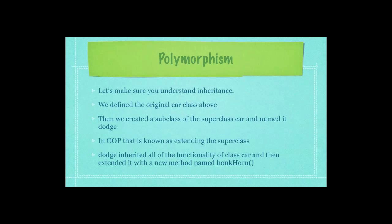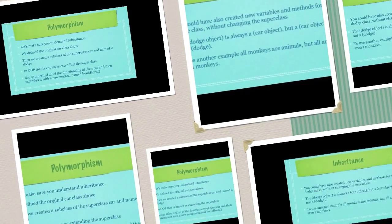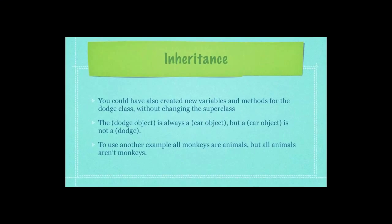We defined the original car class, then created a subclass of the superclass car and named it Dodge. In object-oriented programming, this is known as extending the superclass. Dodge inherited all the functionality of the class car and then extended it with a new method named HulkHorn. Then it went on to create a new function called DriveForward. You could also create new variables and methods for the Dodge class without changing the superclass in any way.